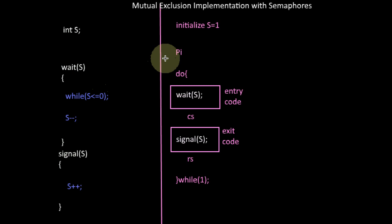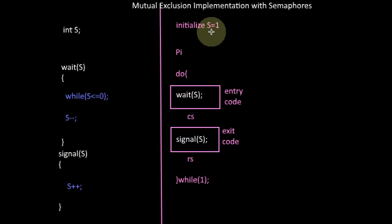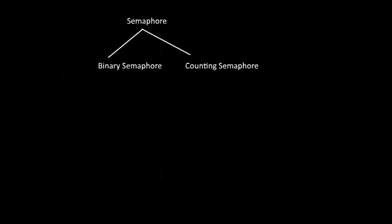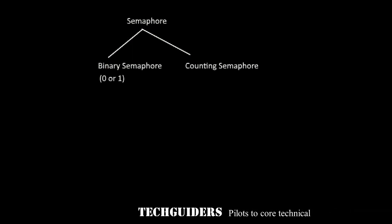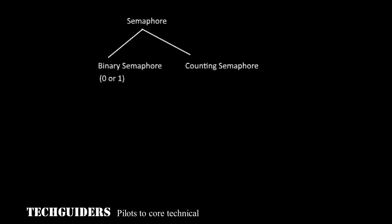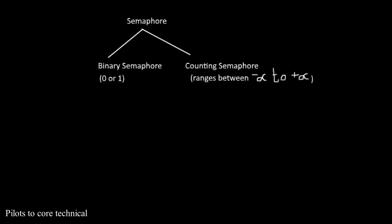In this example of semaphore, the value of semaphore is either zero or one at any time. Such a semaphore is termed as binary semaphore. The semaphore can be of two types: binary semaphore, whose value is either zero or one at any time, and counting semaphore, whose value ranges between minus infinity to plus infinity.